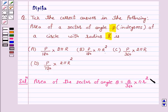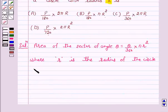Where R is the radius of the circle and θ is the angle of the sector in degrees.